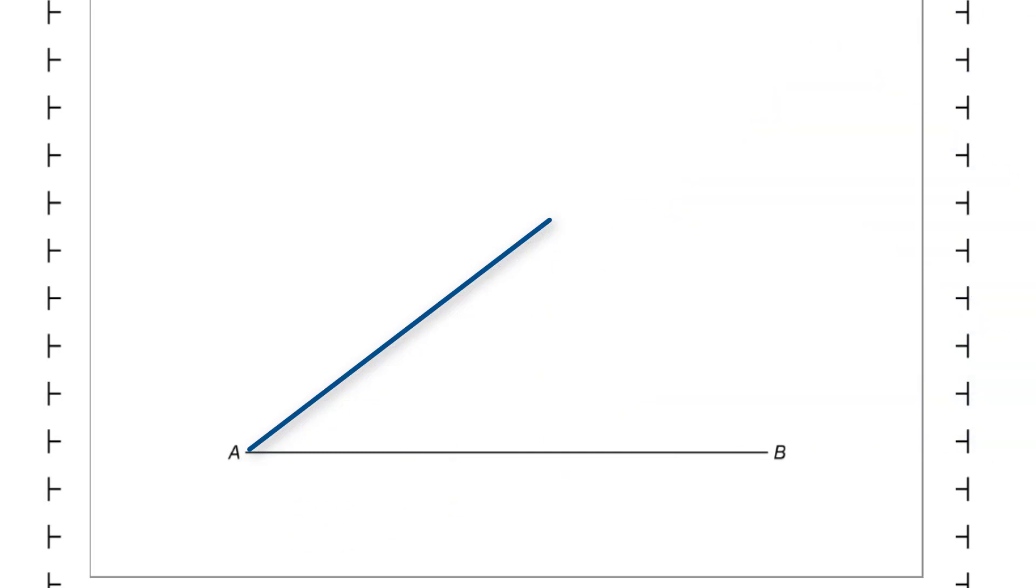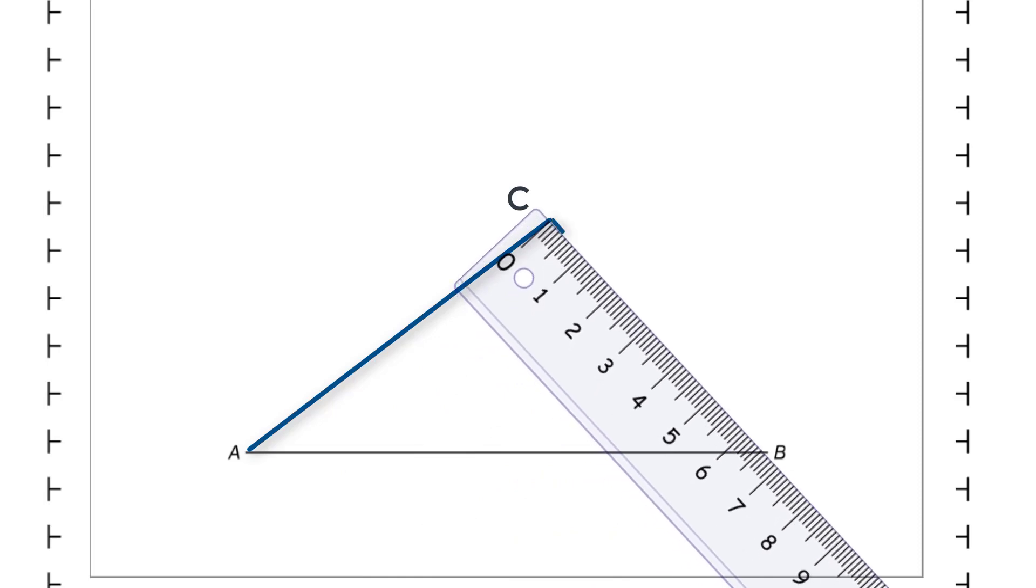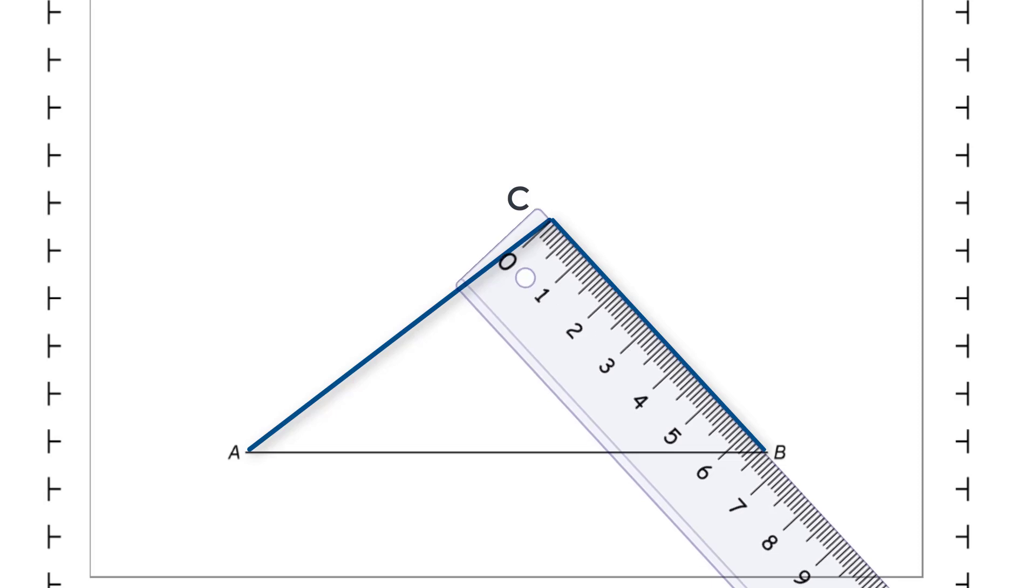Now, once that line's been drawn, then the end of that line is going to be the point C. And then I can join C down to B with another straight line. Job done.